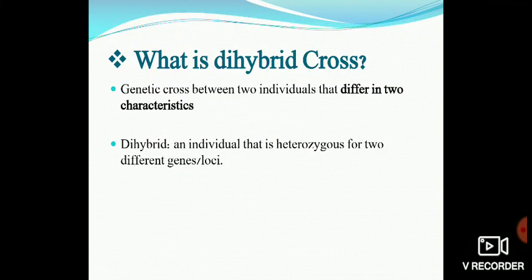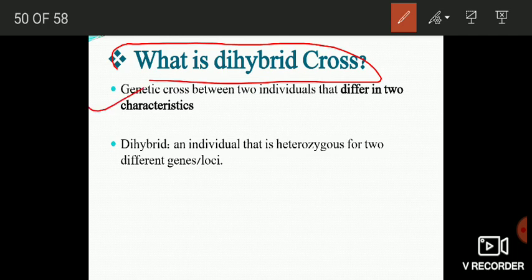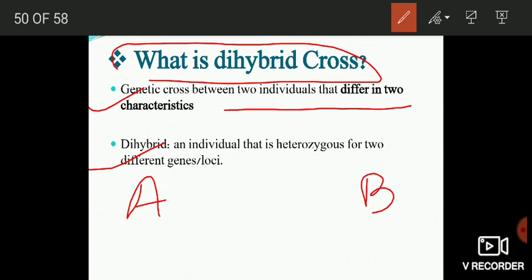Welcome back. Today our topic is the dihybrid cross. First, we will define what a dihybrid cross is, then what a dihybrid is, and finally we will discuss some important details of Mendel's dihybrid cross. A dihybrid cross is a cross made between two homozygous individuals that differ with respect to two characters.